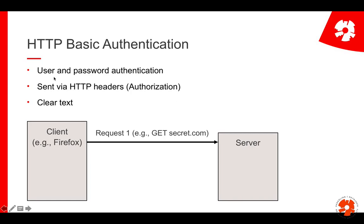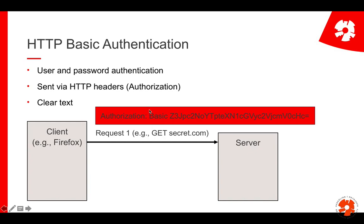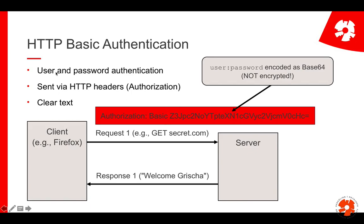We start off with HTTP basic — that's a basic user and password authentication. Whenever you send a request to the server, you send your username and password via the HTTP headers. There is a standard HTTP header called 'authorization' and you just add the information there. The regular request will not be successful because the server expects basic authentication. You add the authorization header saying 'basic', and then there is a string for your user and password. Now this looks pretty encrypted, but it's important to make clear that it's not — this is actually just an encoding.